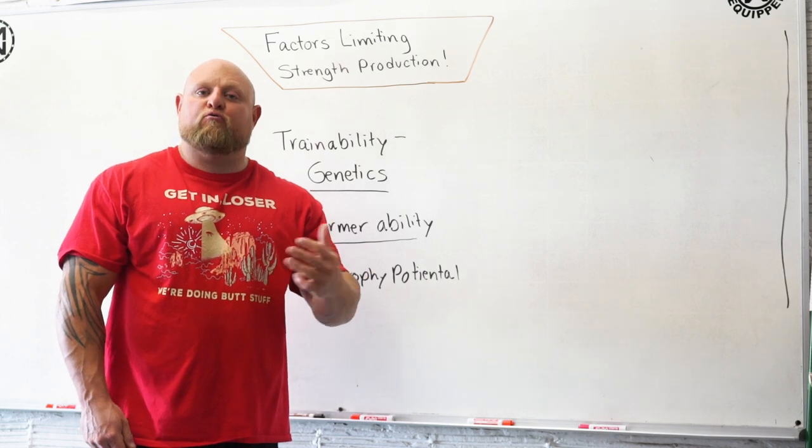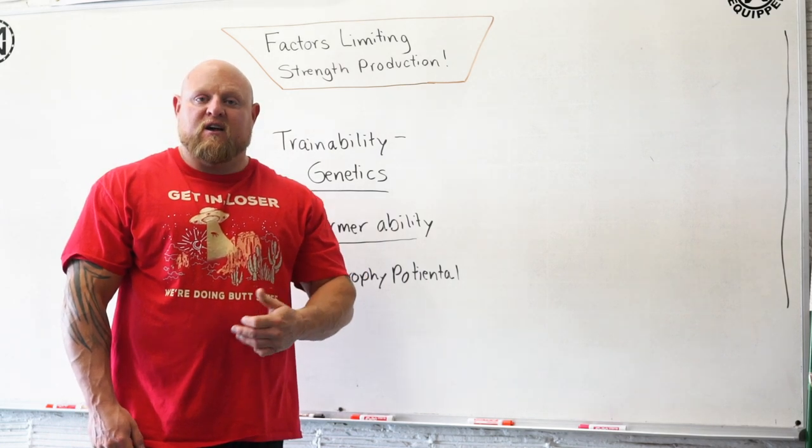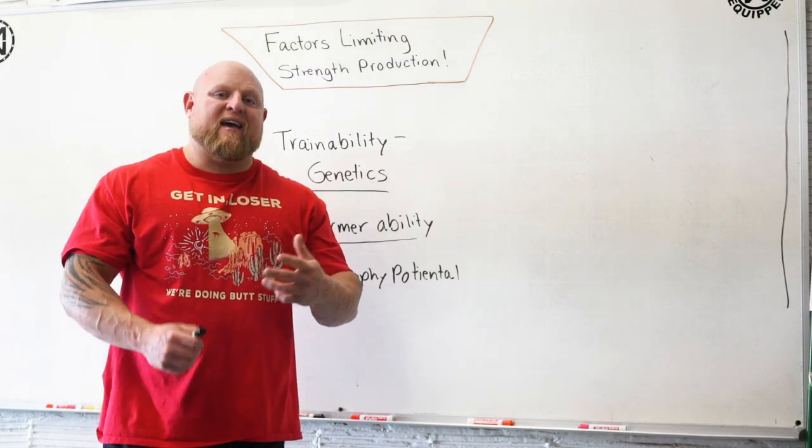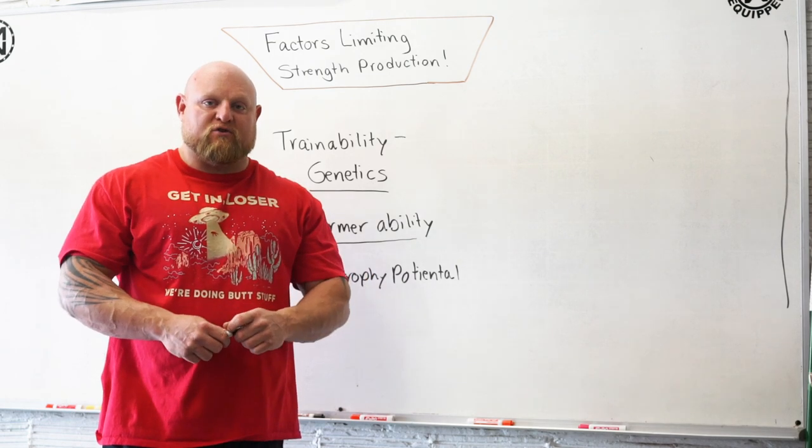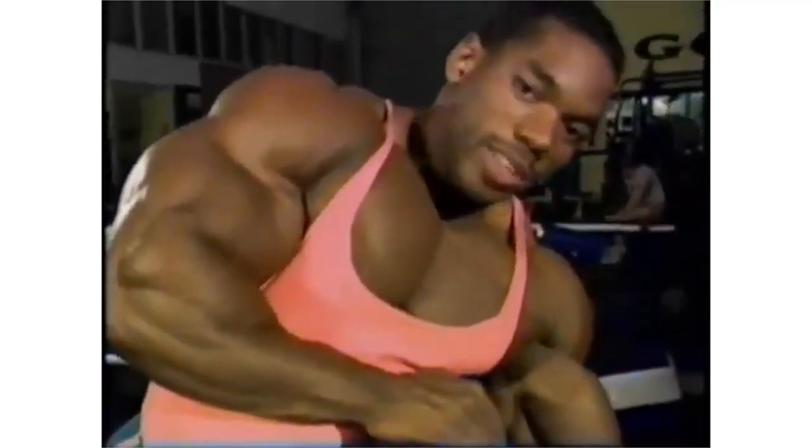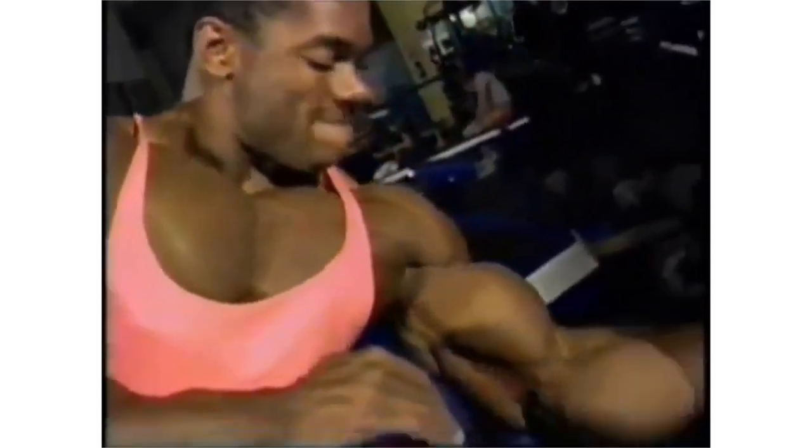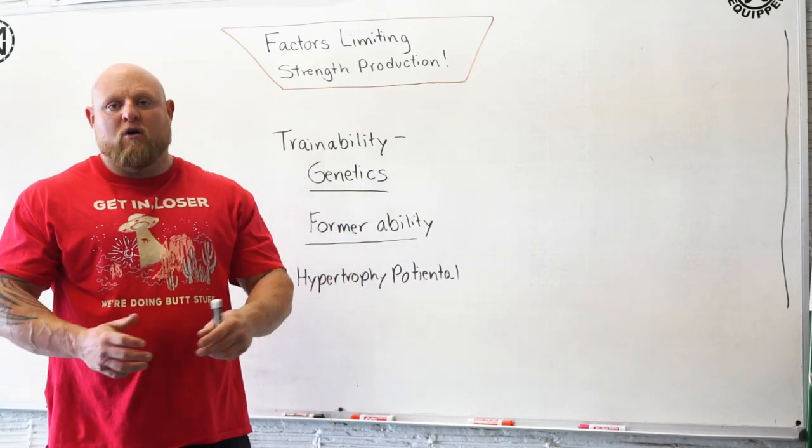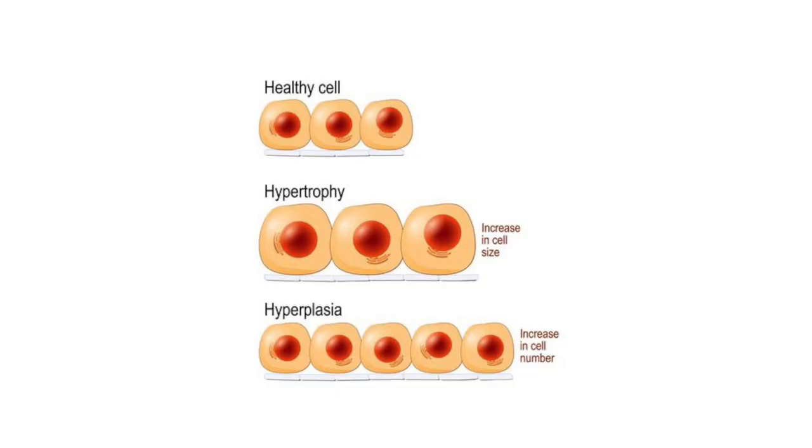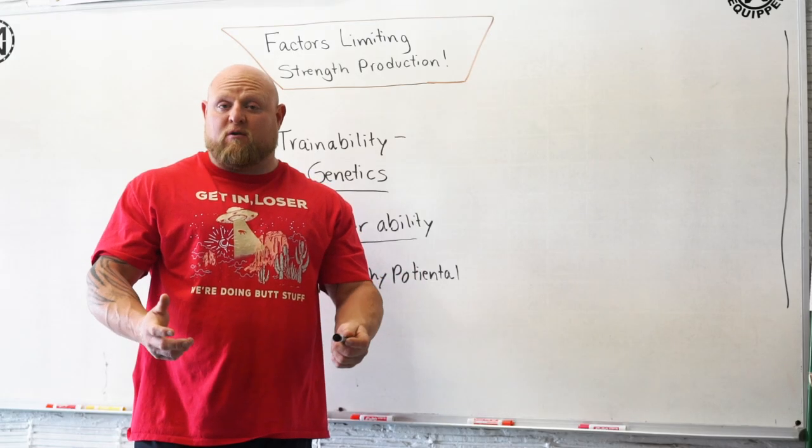But Flex Wheeler, over a summer, put three inches on his arms in like four months at like a teenager, like 14, 15 years old. And right then and there, he knew that he wasn't the same as everyone else. The point is that he had tremendous genetics in hypertrophy potential. Now, why is this possible? Well, it could be hormone profile. It could be at the muscle cell in and of itself. A lot of things we just don't know of why some people can grow and some people can't.